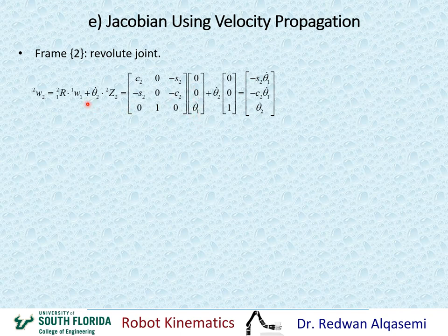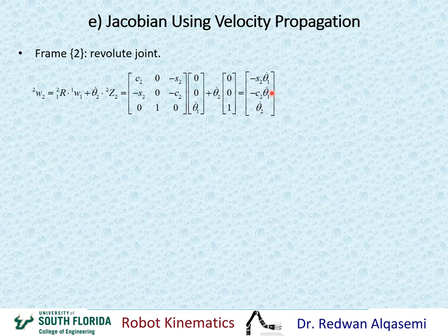We add to this theta 2 dot times Z2,2. Theta 2 dot is our variable for joint 2, and Z2,2 is always 0, 0, 1. If we do this multiplication and addition, we find that the angular velocities of frame 2 relative to frame 2 are negative S2 theta 1 dot, negative C2 theta 1 dot, and theta 2 dot.